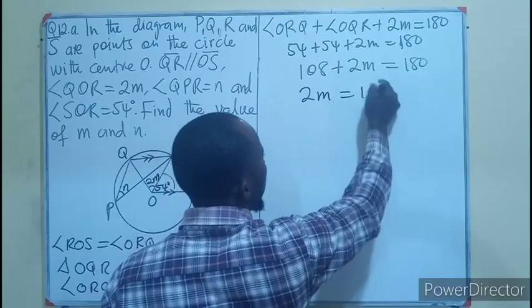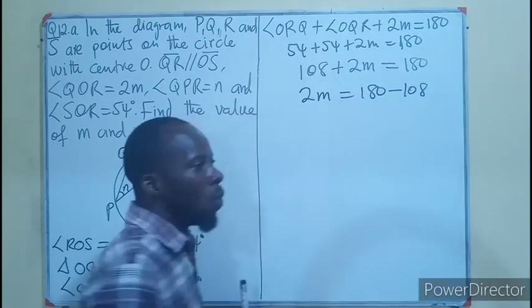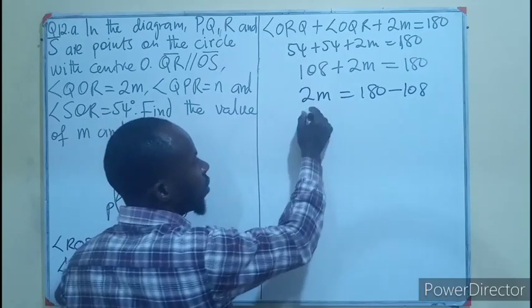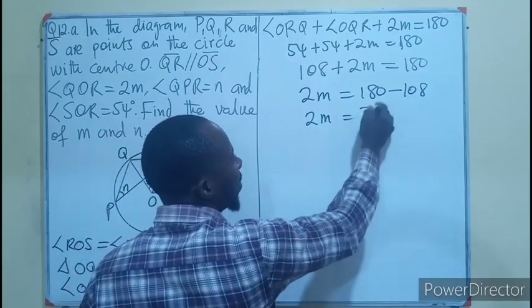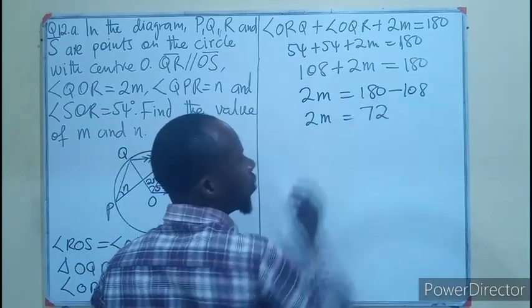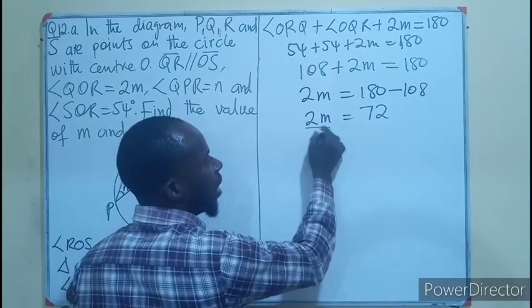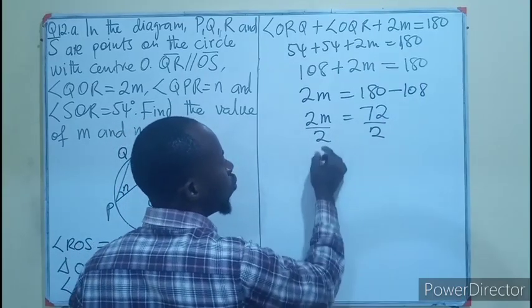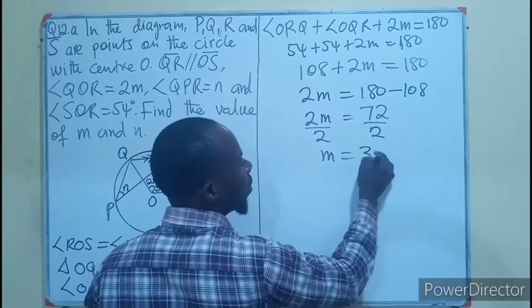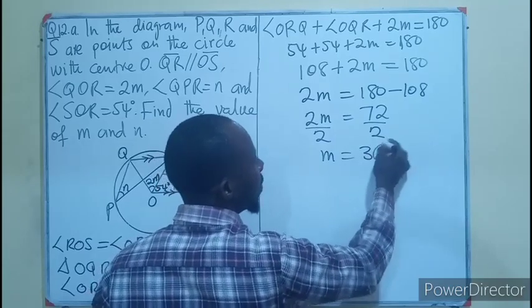Dividing by 2 on both sides, m equals 36 degrees. So the value of m is 36 degrees.